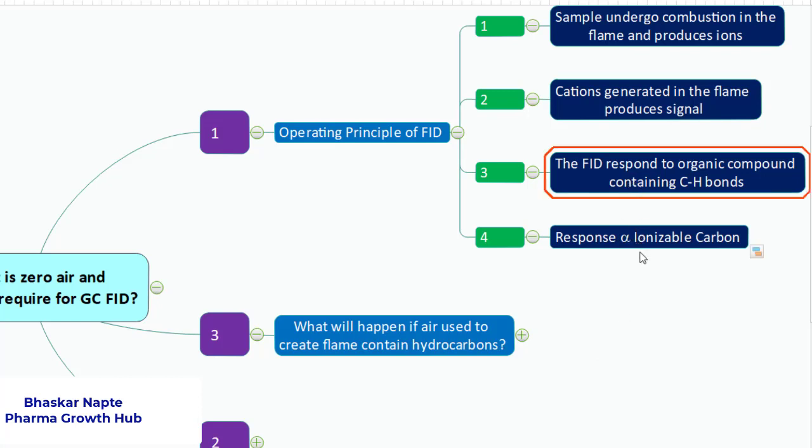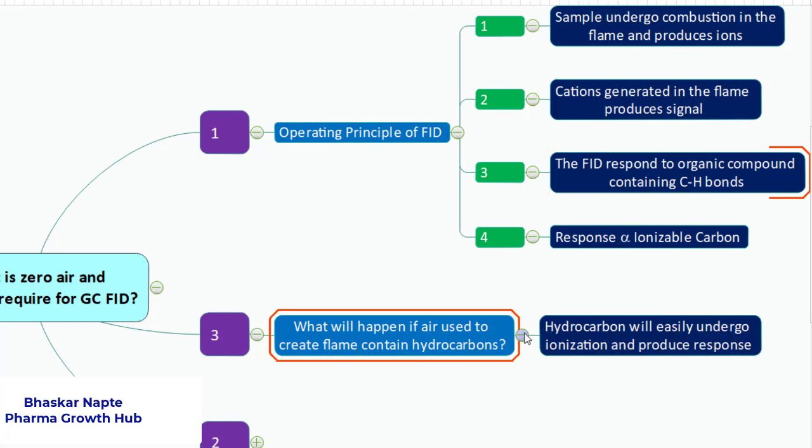If you understand clearly according to point number three - what is point number three? FID responds to organic compounds containing carbon and hydrogen bonds, means the organic compounds which are hydrocarbons give very good response to the FID detector. So if your air contains hydrocarbons, what is going to happen?